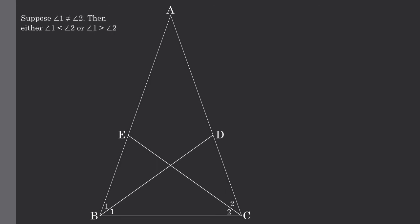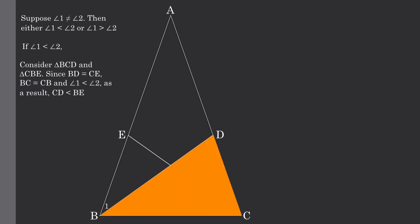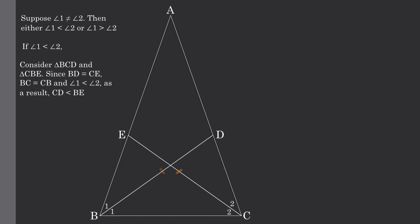Now let's suppose angle 1 does not equal angle 2. Then either angle 1 is less than angle 2, or angle 1 is greater than angle 2. Let's look at what happens if angle 1 is less than angle 2. Considering triangle BCD and triangle CBE, since BD equals CE and BC equals CB, and angle 1 is less than angle 2, the result is that side CD will be less than side BE.